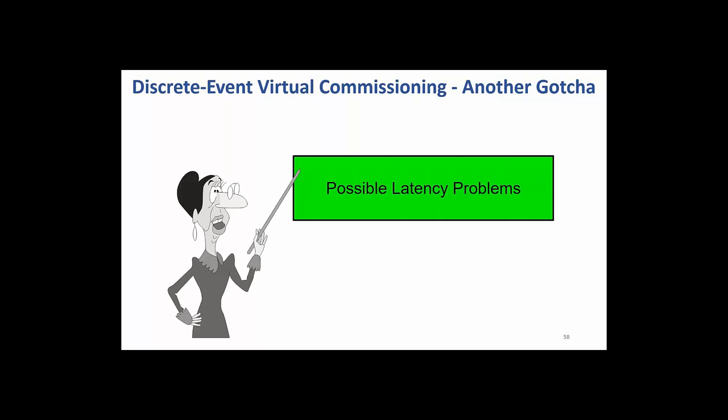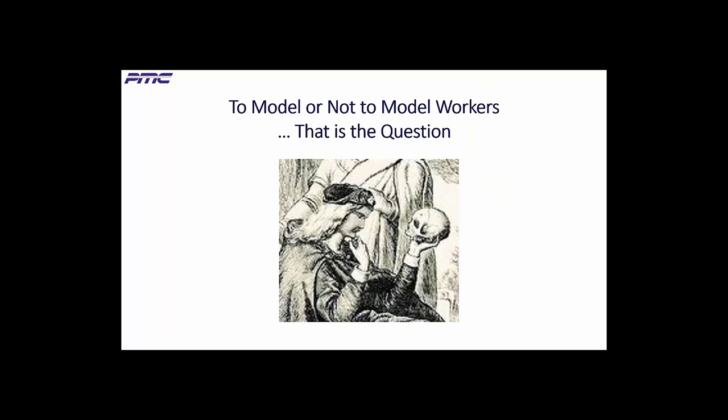Another gotcha: virtual commissioning sends signals to and from the discrete event model and the PLCs. Although this happens very fast, it is not done in zero time — the delay is called latency. If your project has a lot of signals, you could get to the point where the simulation cannot keep up with all the signals in time. All discrete event simulation models workstations, buffers, and material handling equipment like conveyors, forklifts, AGVs, and cranes. But not all models include workers. To paraphrase Hamlet: to model or not to model workers, that is the question.